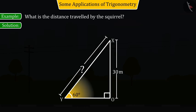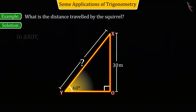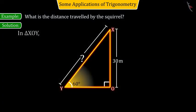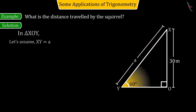Let us assume that in the right-angled triangle XOY, the length of the string XY is A. XO equals 30 meters, and the value of theta is given as 60 degrees, while OY is unknown.